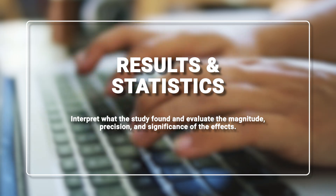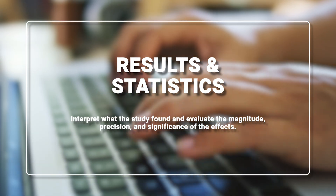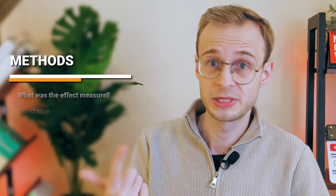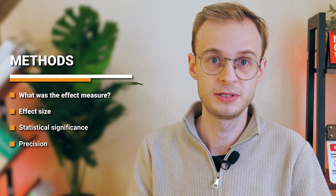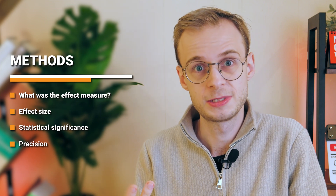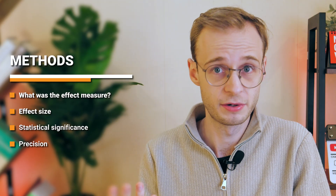Once you're happy with the methods, move on to results and statistics. What did they actually find, and are the results statistically and clinically meaningful? My checklist here has four things: what was the effect measure — risk ratio, odds ratio, hazard ratio, mean difference? What is the size of the effect? Is it statistically significant — check the p-value and whether the confidence intervals cross the line of no effect? And how precise is it — are the confidence intervals narrow or wide? Also check whether the study appears adequately powered for the primary outcome.